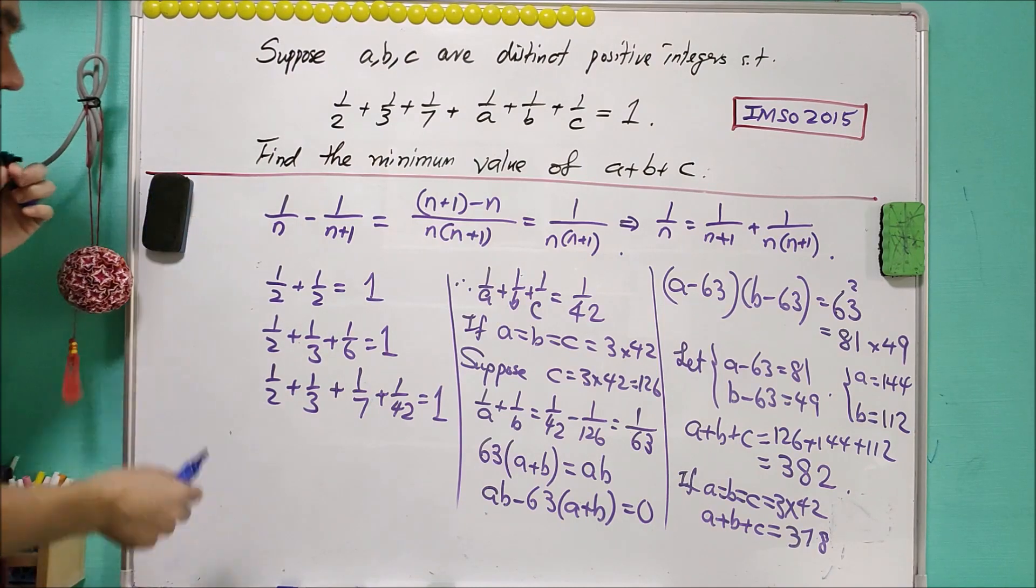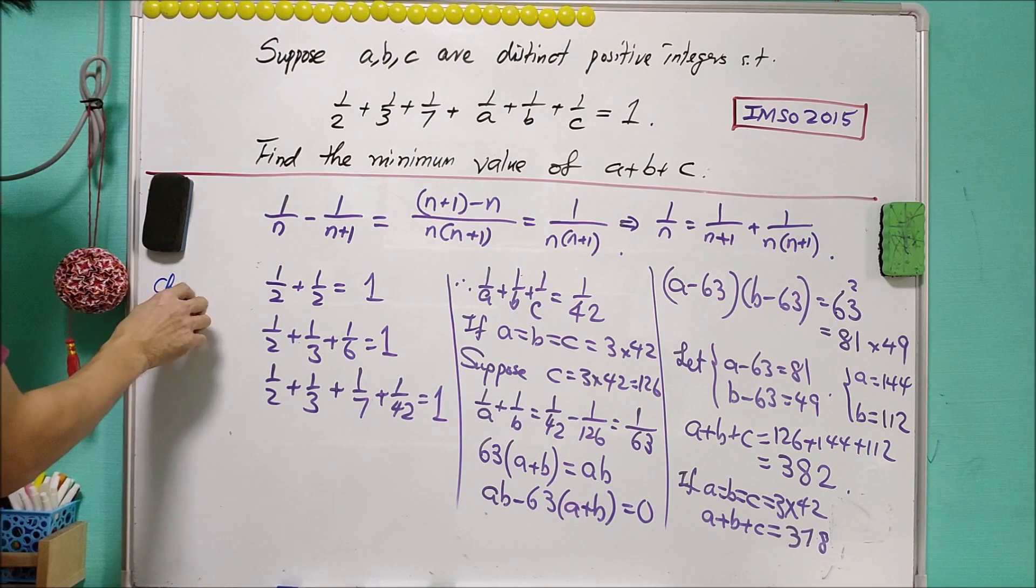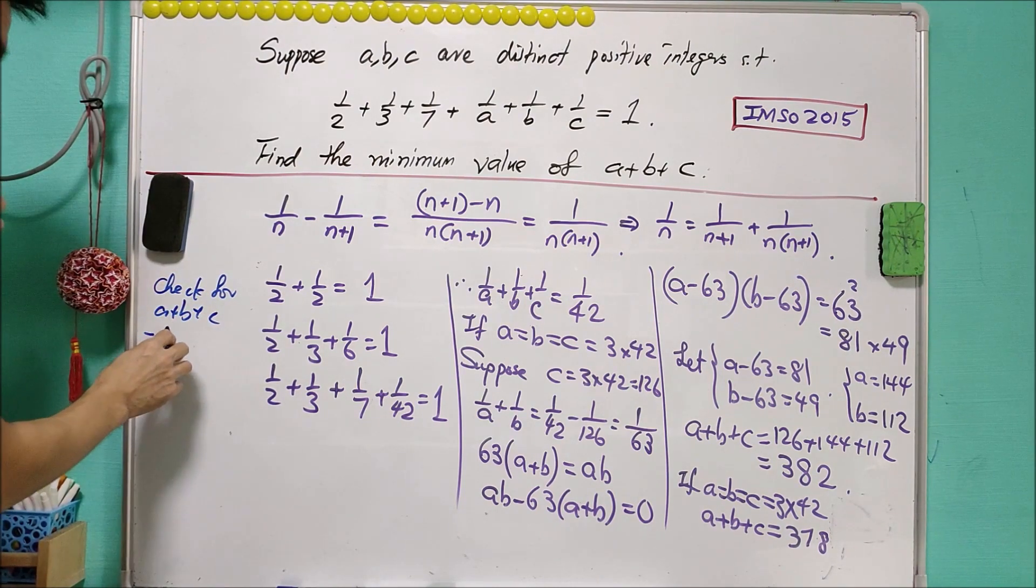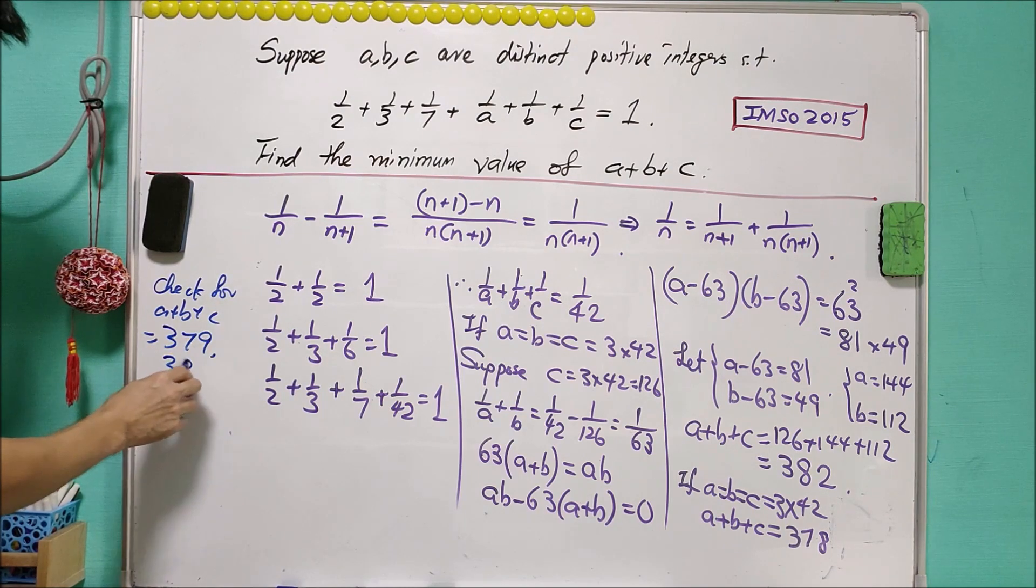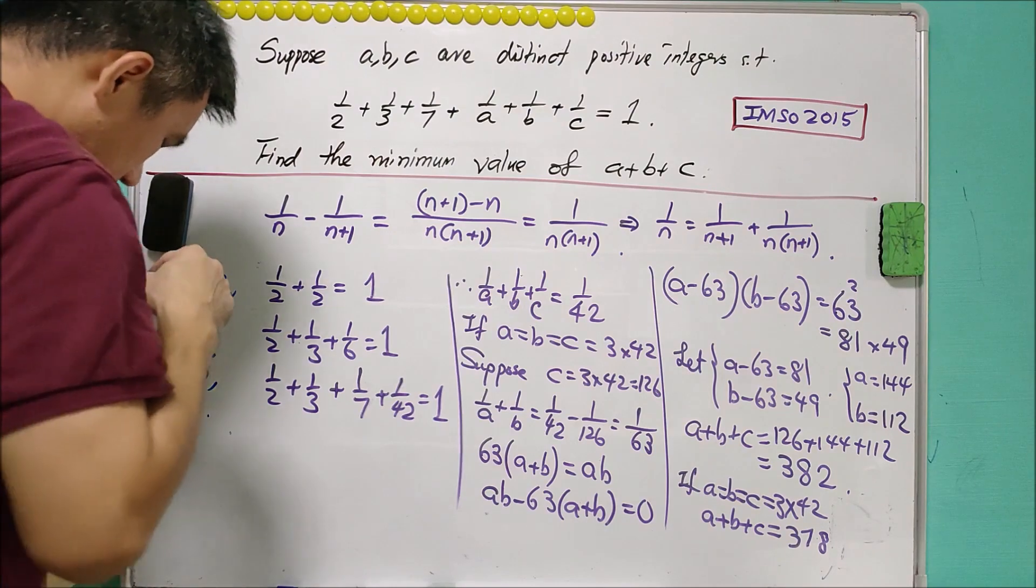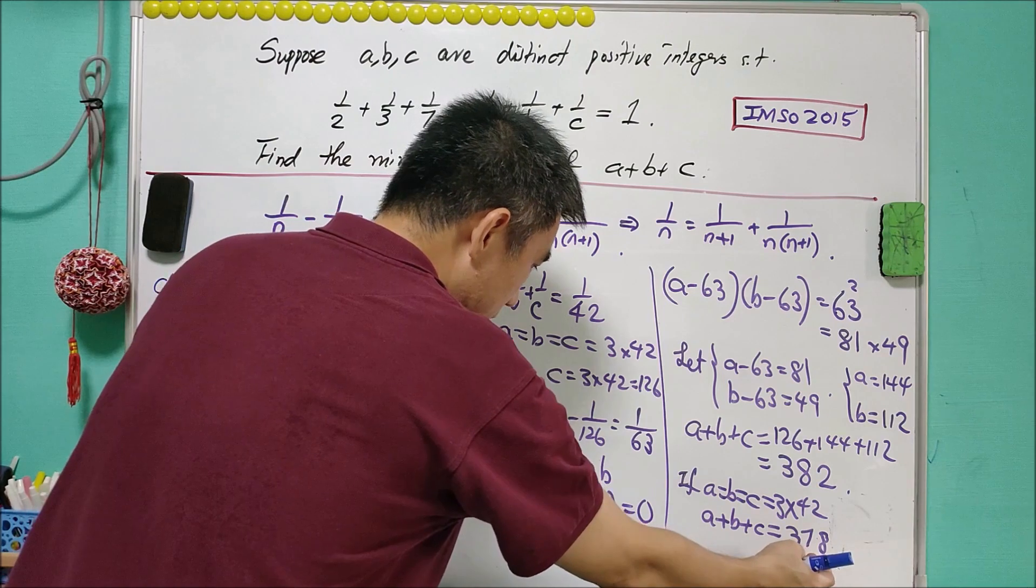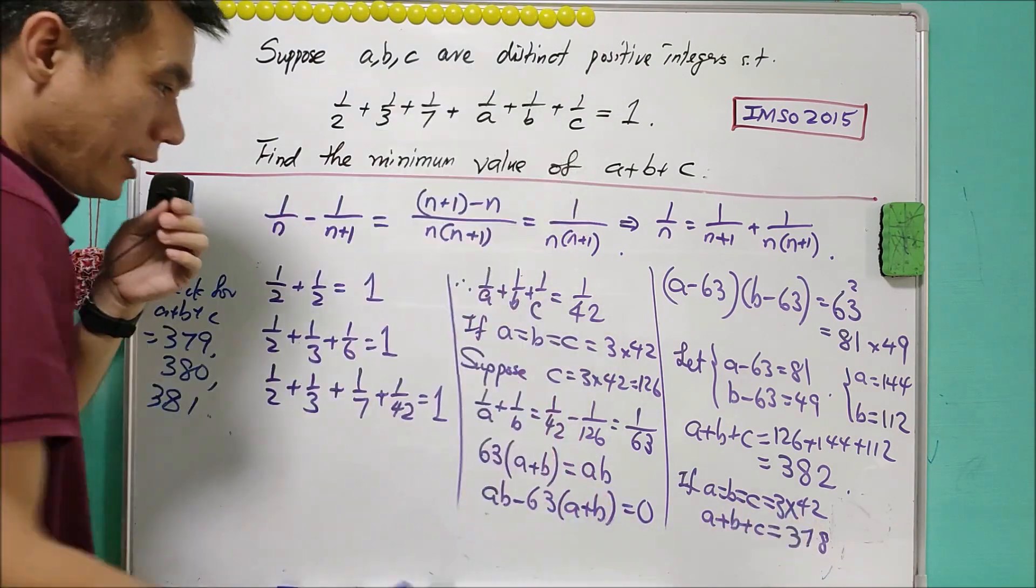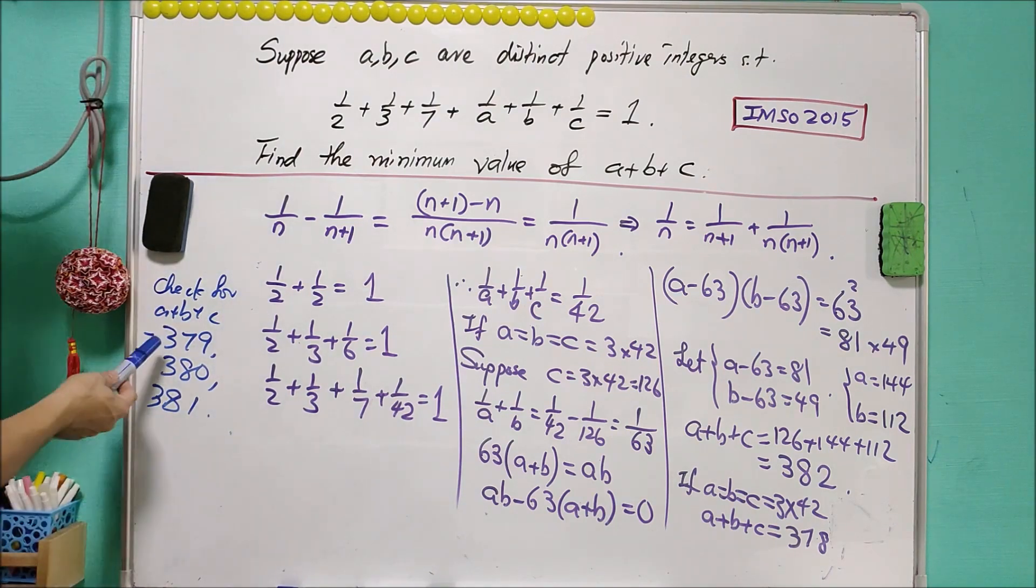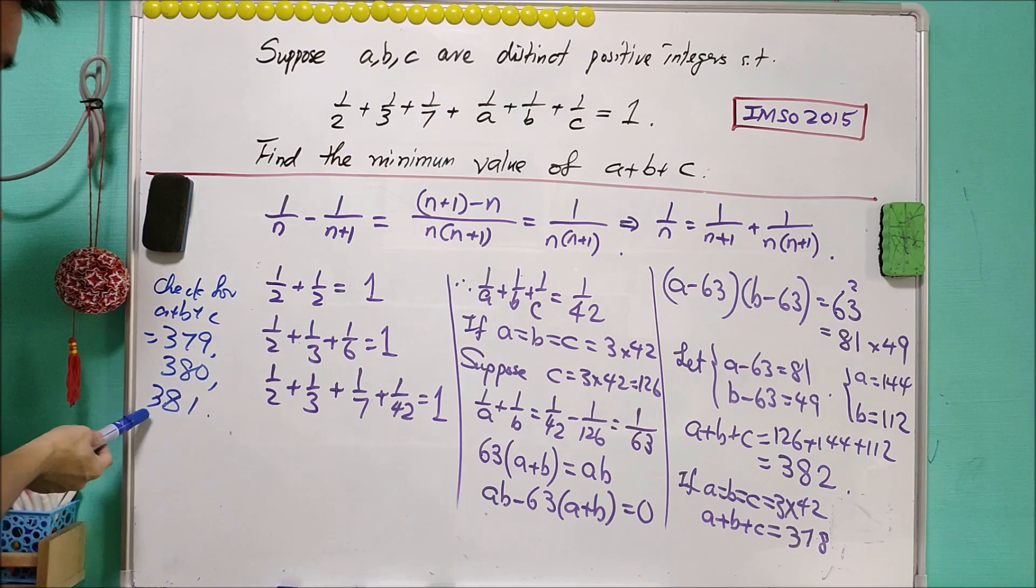Let me continue here. This is a partial solution. We still need to check for A plus B plus C equals to 379, 380, and 381. What we know that when A plus B plus C equals to 378, then A must be equal to B equals to C. And this is not allowed. But what happened for the sum equals to 379, 380, and 381. If the sum of A, B, C is any of this number, then this is not the minimum.